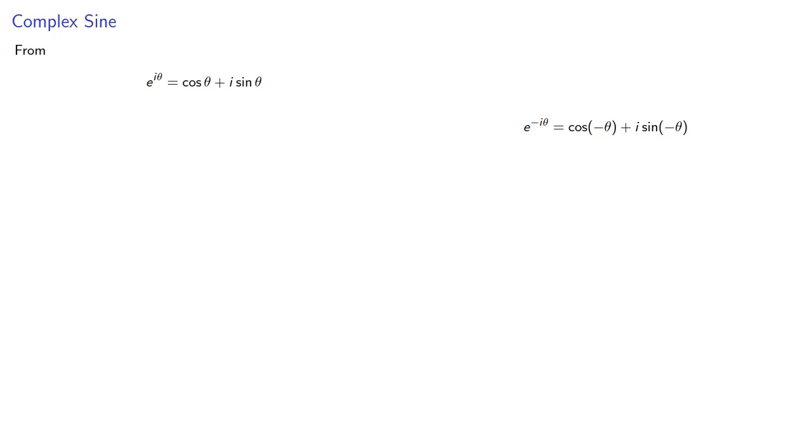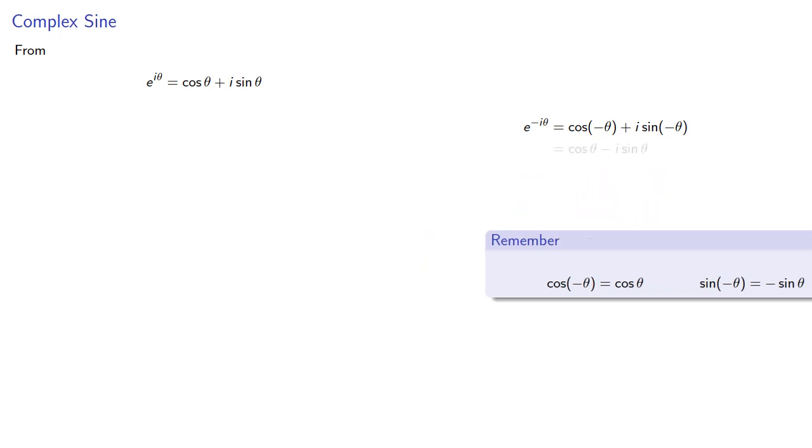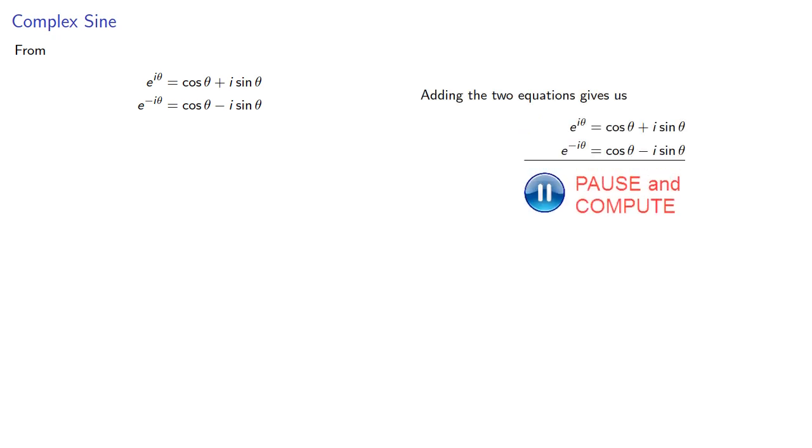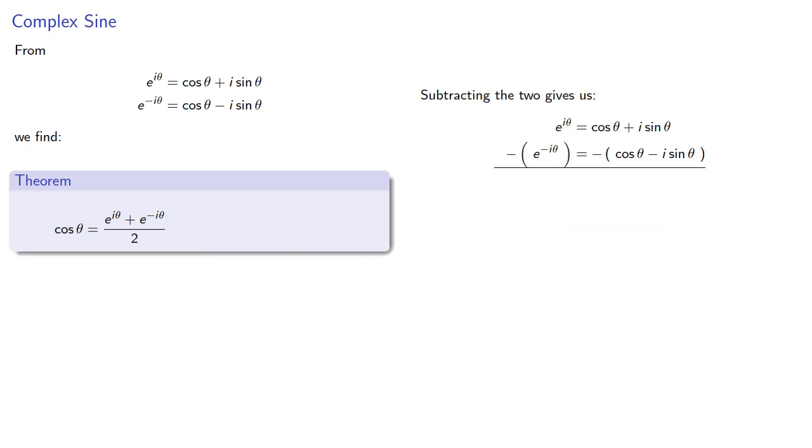Remember that cosine of negative theta and sine of negative theta have nice simplifications. If we add these two equations, we get an expression for cosine theta. If we subtract them, we get sine of theta.